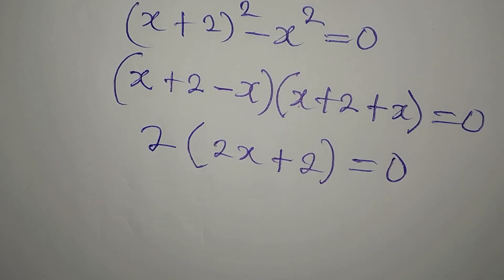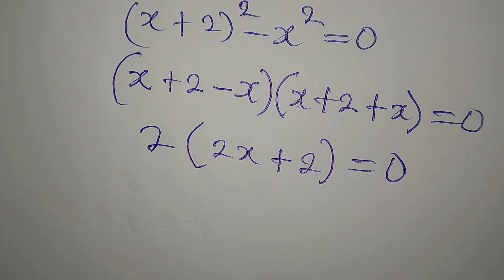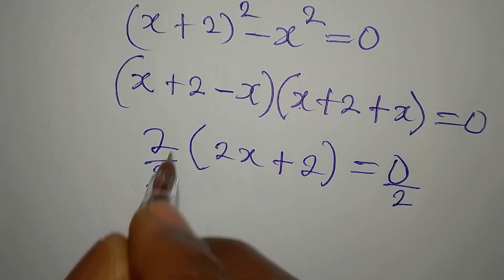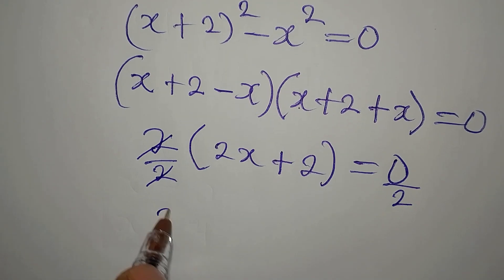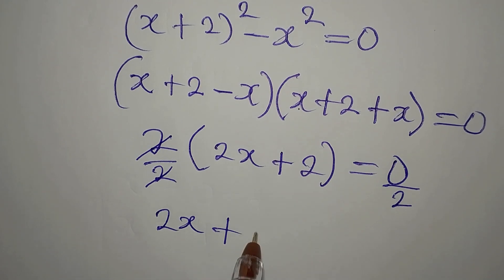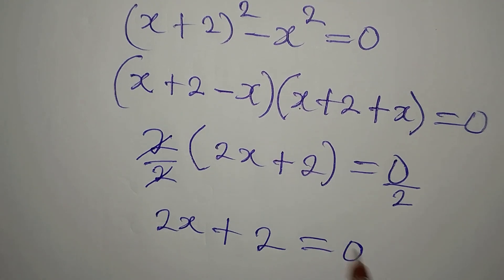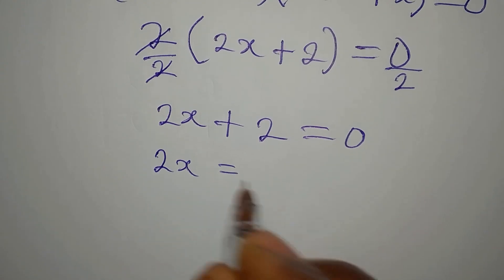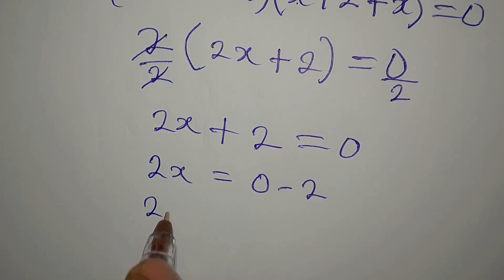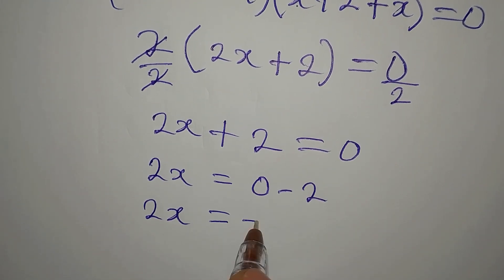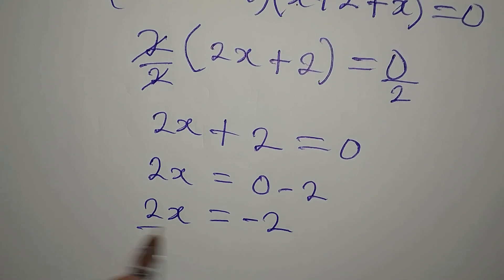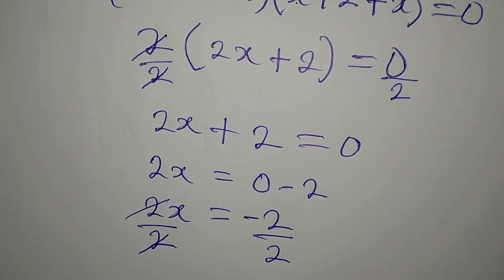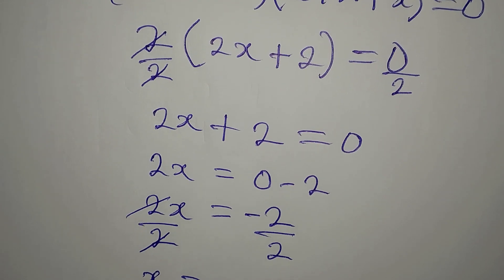Should I open the bracket or better divide both sides by 2? Divide by 2. So, this goes here, this goes here. We have 2x plus 2 equal to 0. Now, 2x is equal to 0 minus 2. Then, 2x is equal to minus 2. We can divide both sides by 2. This will go. And our x is now minus 1.